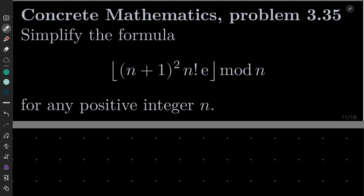Hello friends. In this video I'd like to solve problem 35 from chapter 3 of Concrete Mathematics — a great book by the way. We wish to simplify the formula: floor of (n+1)² · n! · e, modulo n, for any positive integer n.